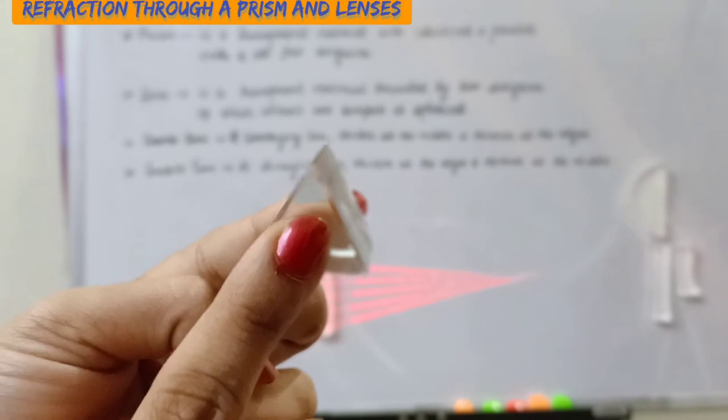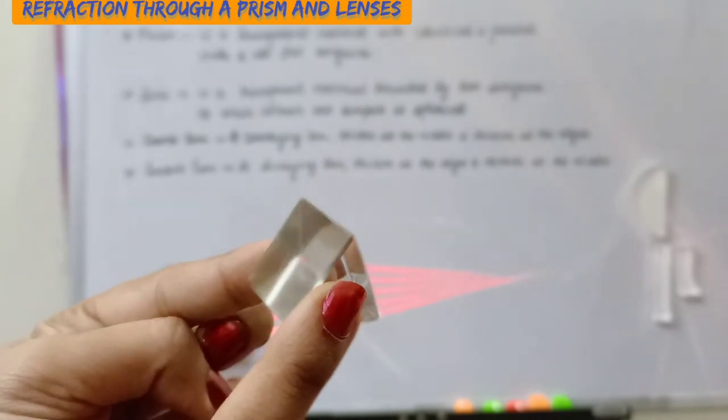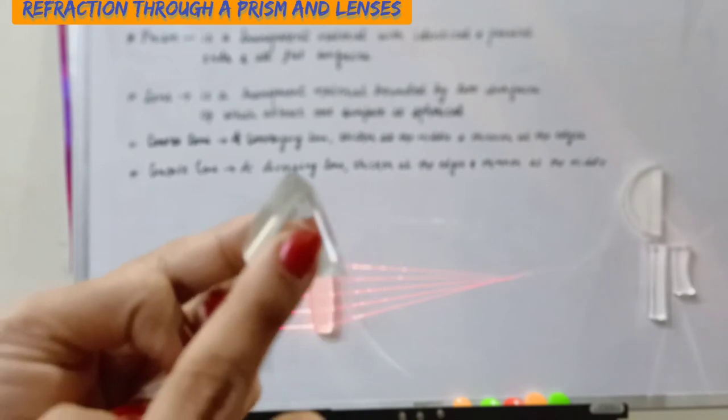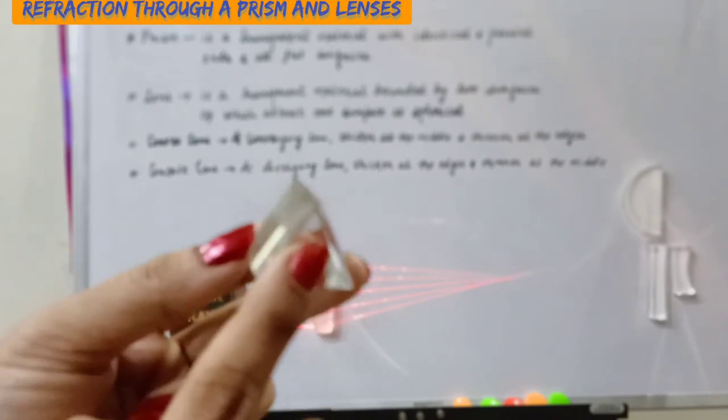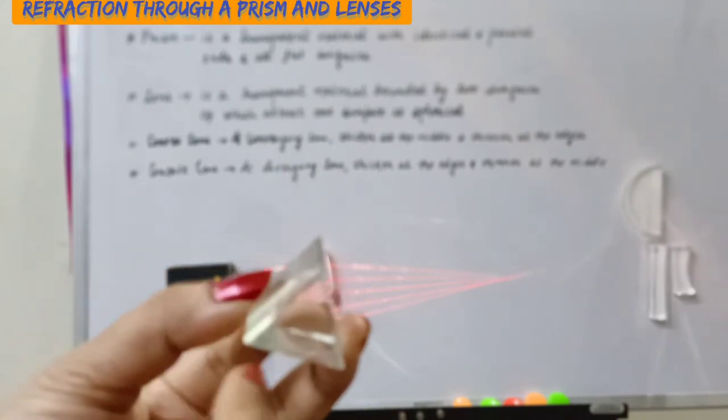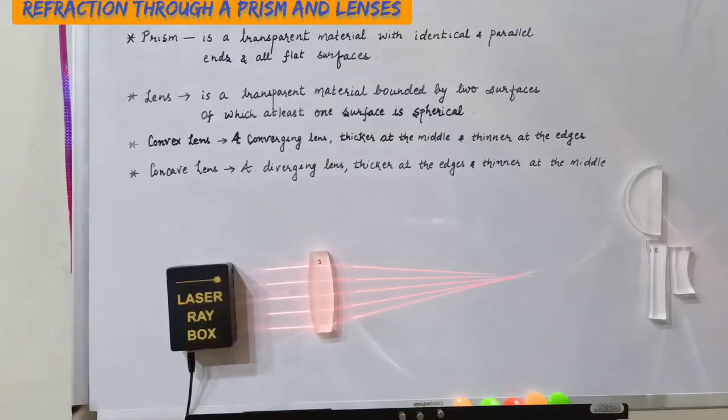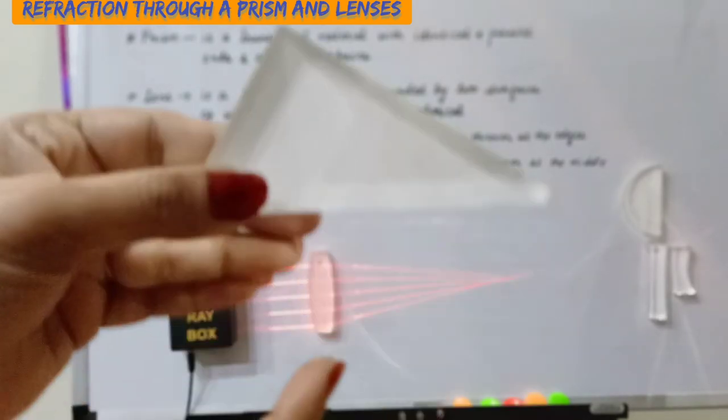These are the identical and parallel ends, and all the surfaces of a prism are flat. This is also a prism as it also has identical and parallel surfaces and all the ends are flat.